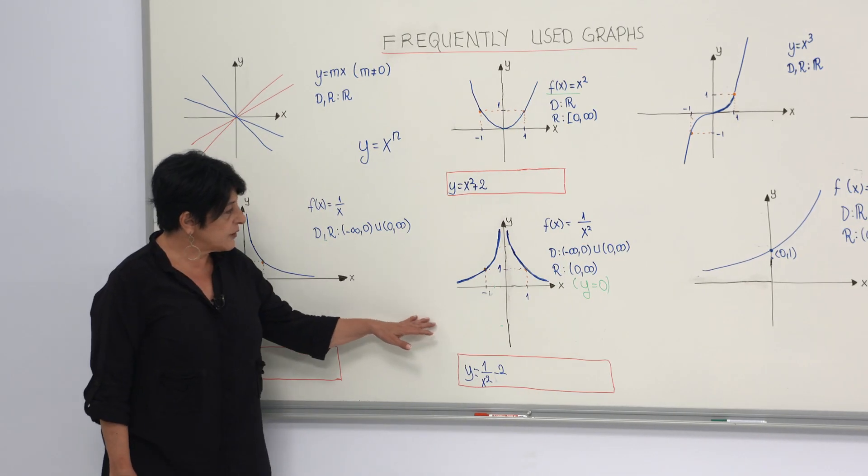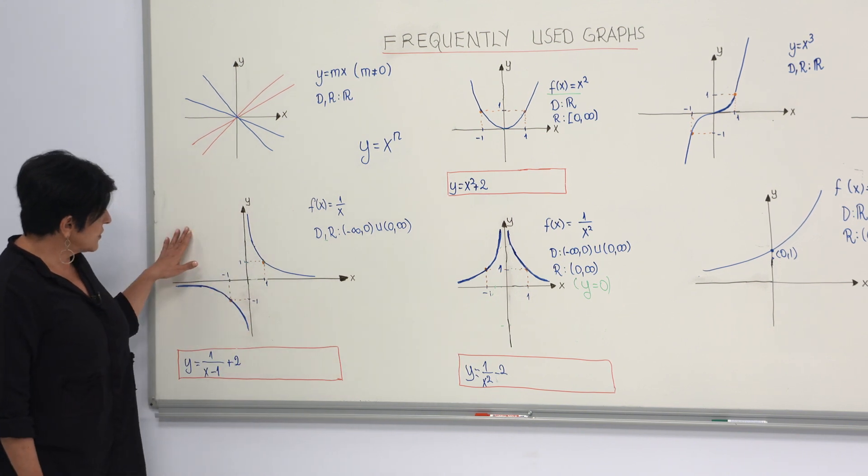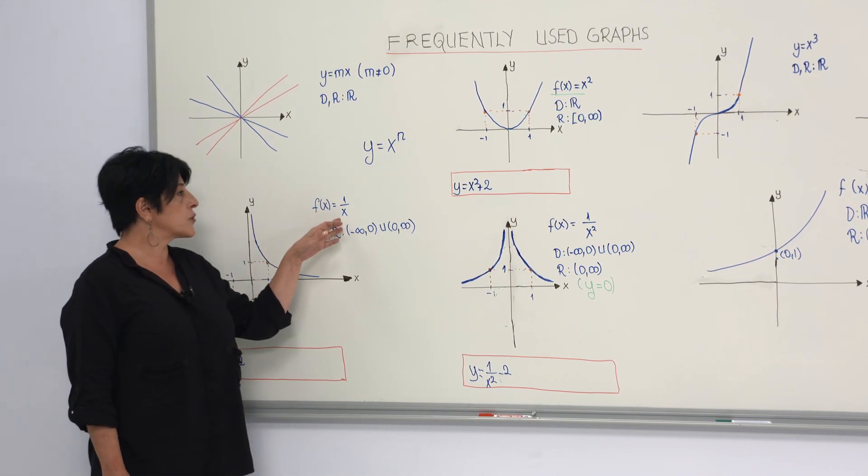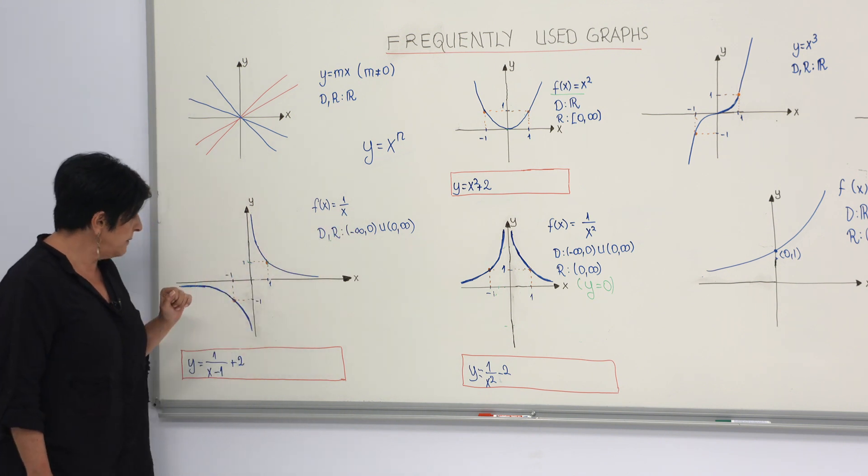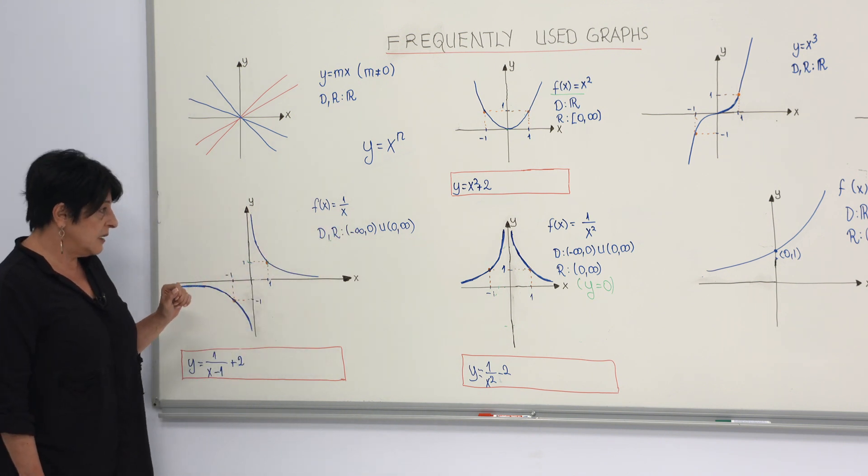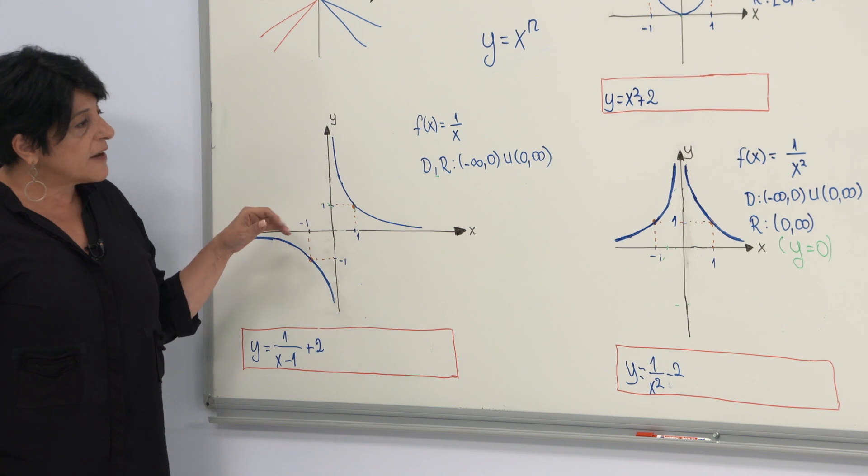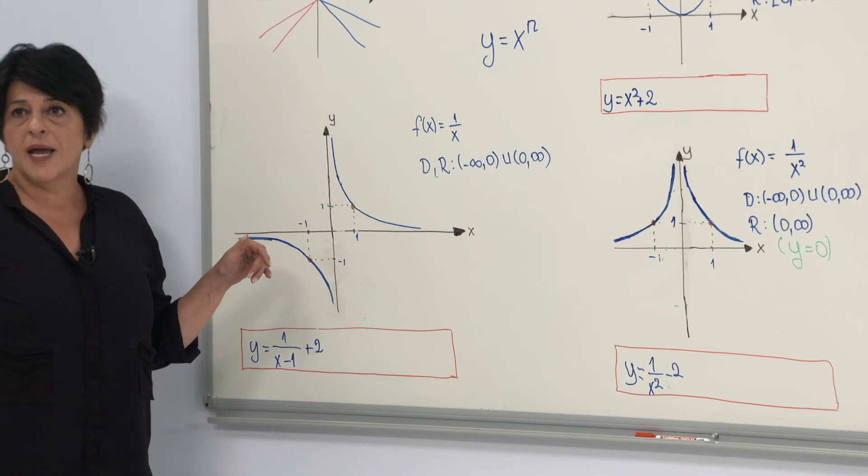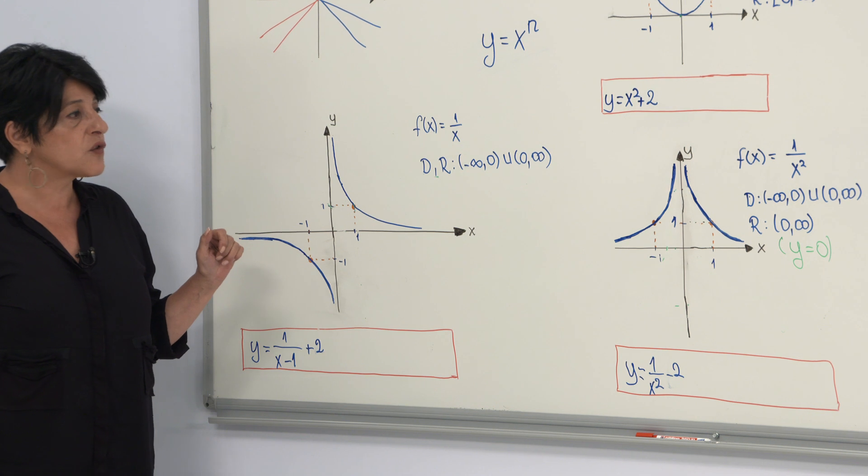These two graphs are the graphs of functions when y is proportional, inversely proportional with x and x squared respectively. As you can see, these two graphs have asymptotes. The x-axis and y-axis are asymptotes of these graphs.